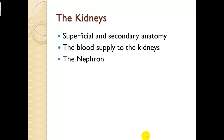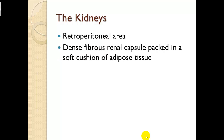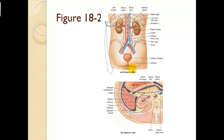The kidneys — superficial and secondary anatomy: the blood supply to the kidneys and the nephron. The kidneys are located in the retroperitoneal area, which is a dense fibrous renal capsule packed in a soft cushion of adipose tissue, or fat. The kidneys have a highly vascular supply. Ureters carry urine to the bladder, and then the urethra expels it to the exterior of the body.